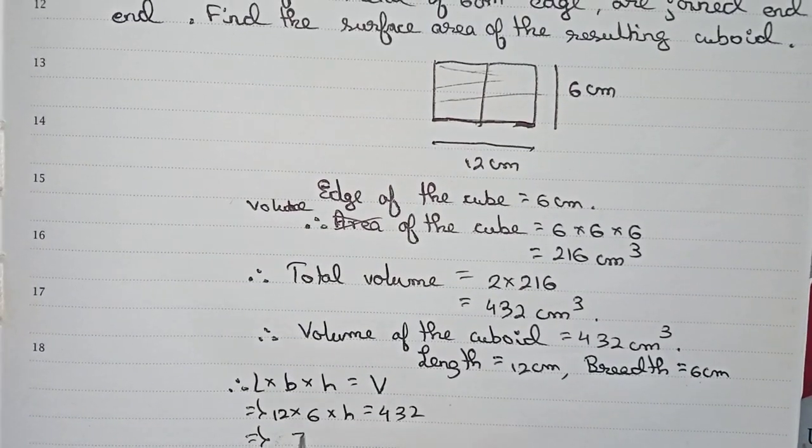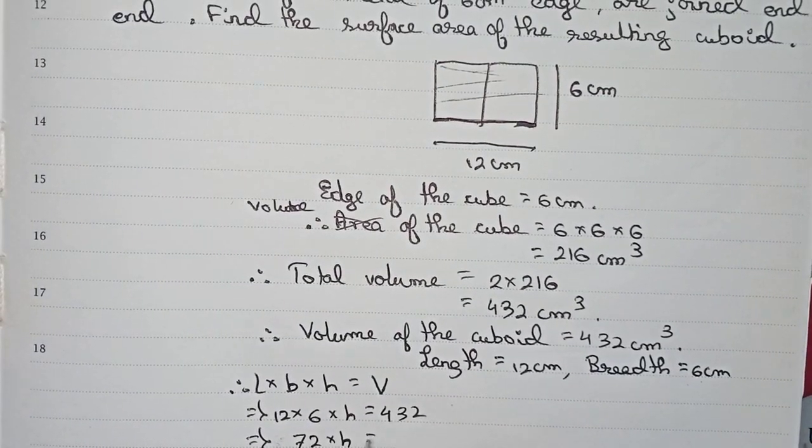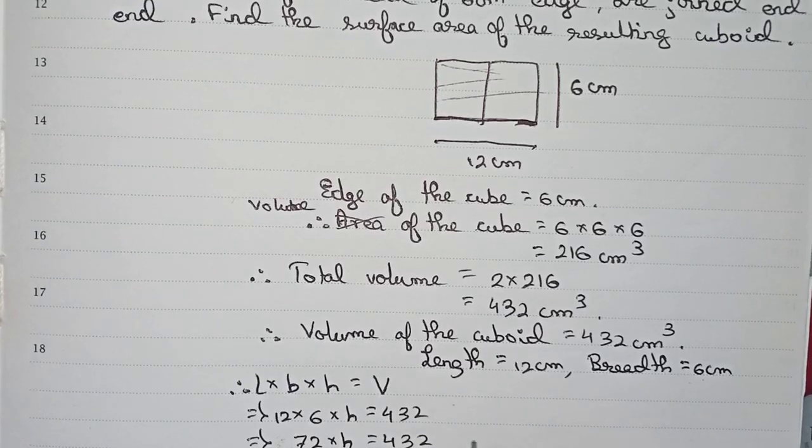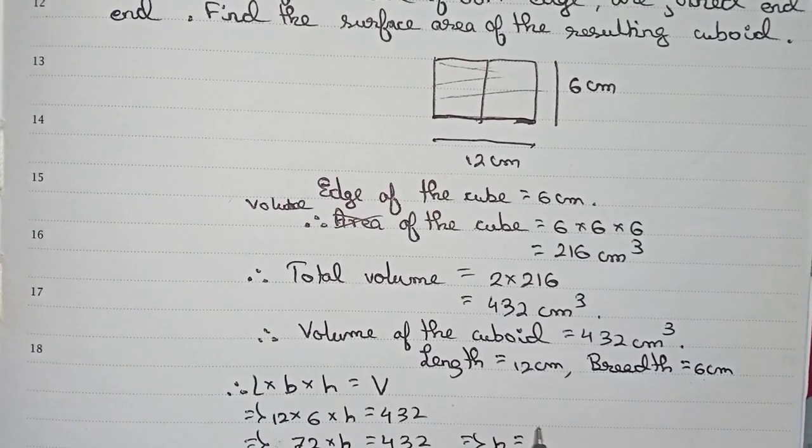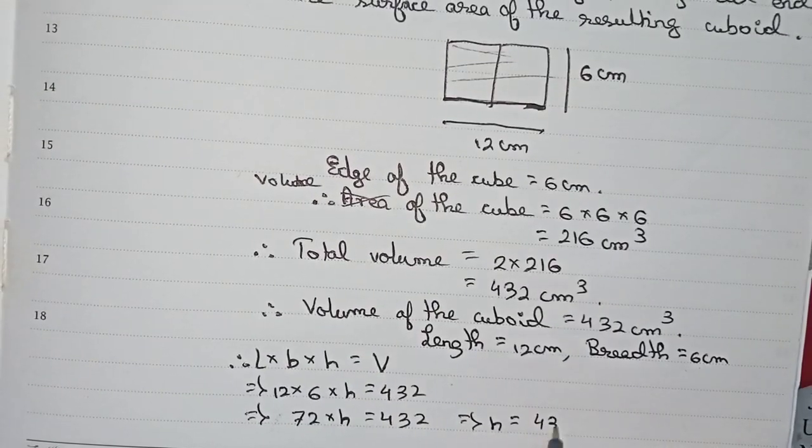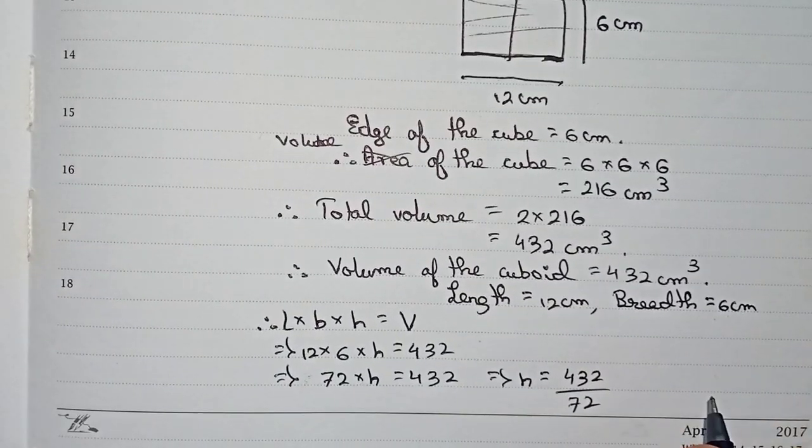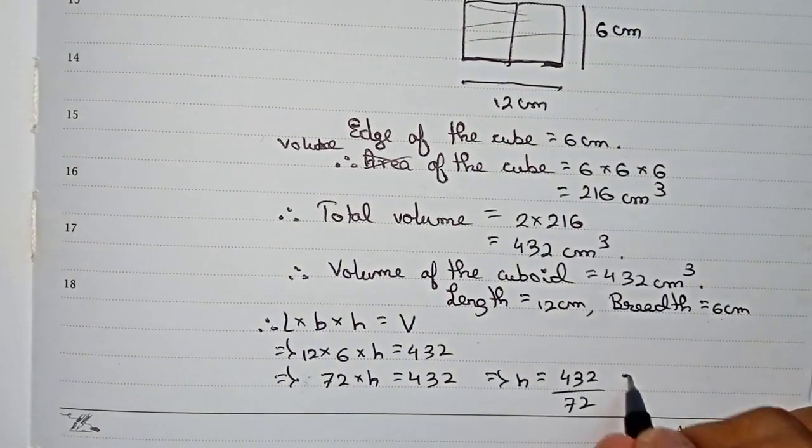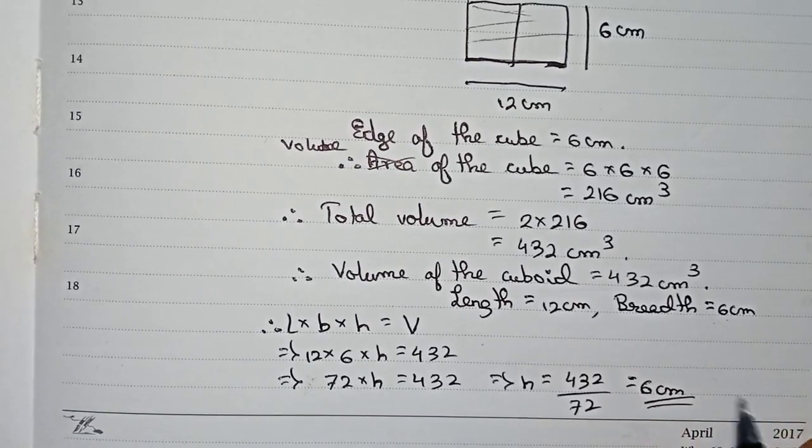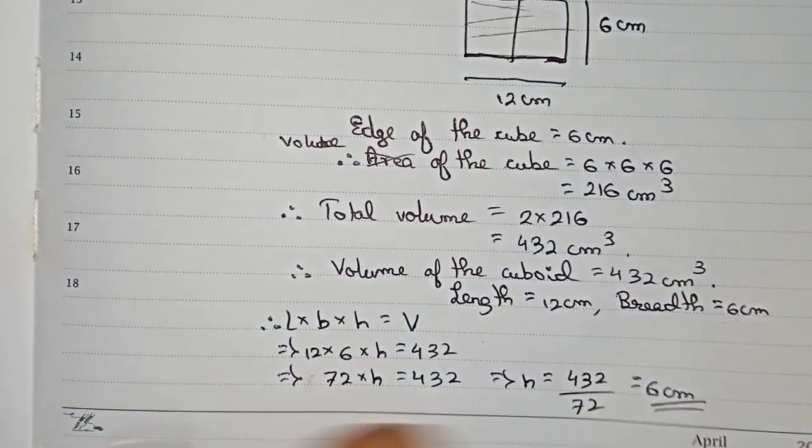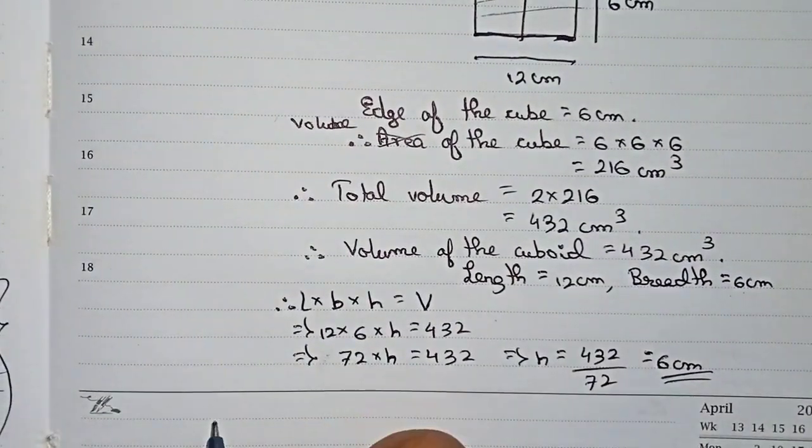So height will be equal to... 72 will go from division, so 432 by 72, it becomes 6. So our height is also 6 centimeter. From this information we can then find out the surface area.